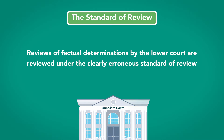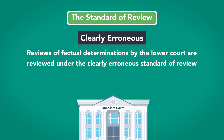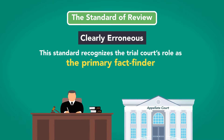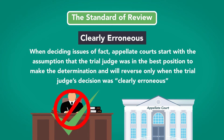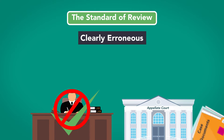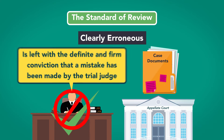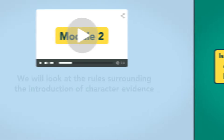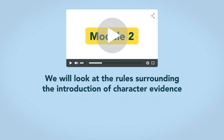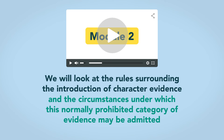Reviews of factual determinations by the lower court are reviewed under the clearly erroneous standard of review. This standard recognizes the trial court's role as the primary fact finder. Therefore, when deciding issues of fact, an appellate court should start with the assumption that the trial judge was in the best position to make the determination, and will reverse only when the trial judge's decision was clearly erroneous — that is, when the appellate court, in considering the entire body of evidence, is left with a definite and firm conviction that a mistake has been made. In our next module, we will look at the rules surrounding the introduction of character evidence, and the circumstances under which this normally prohibited category of evidence may be admitted.